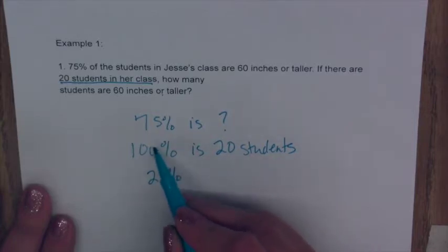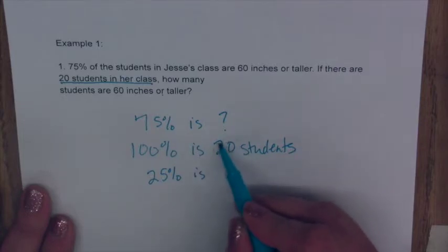to get from 100 to 25 I divide by 4. So I do the same thing here. So I'm dividing this by 4. So 20 divided by 4 is 5.